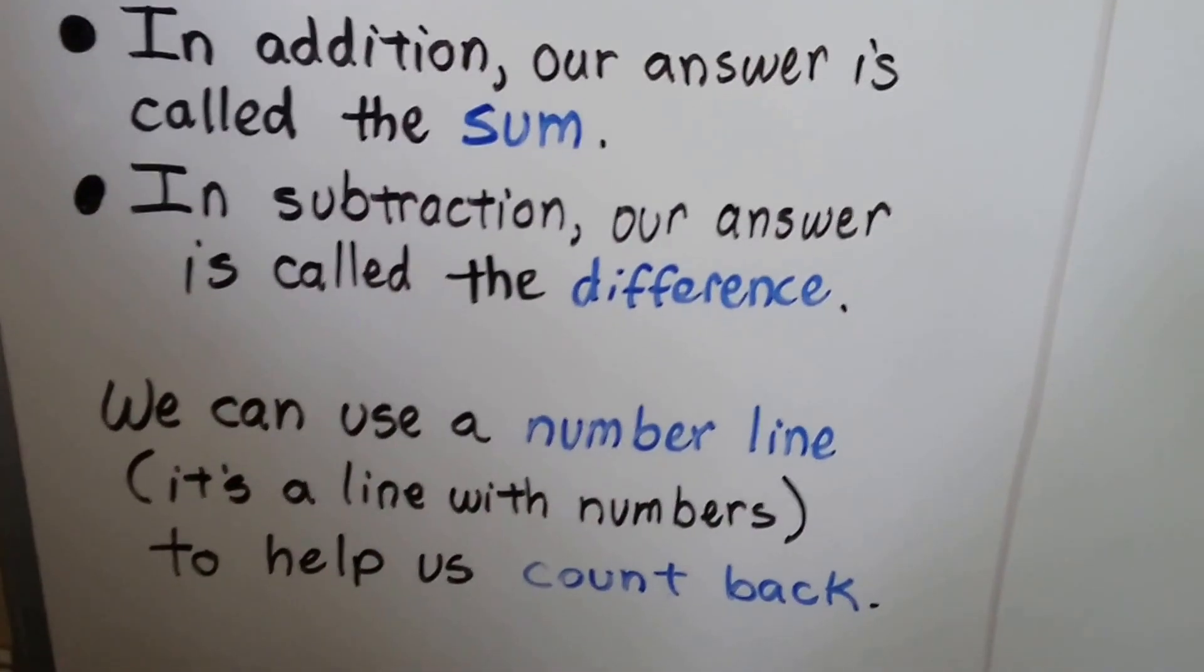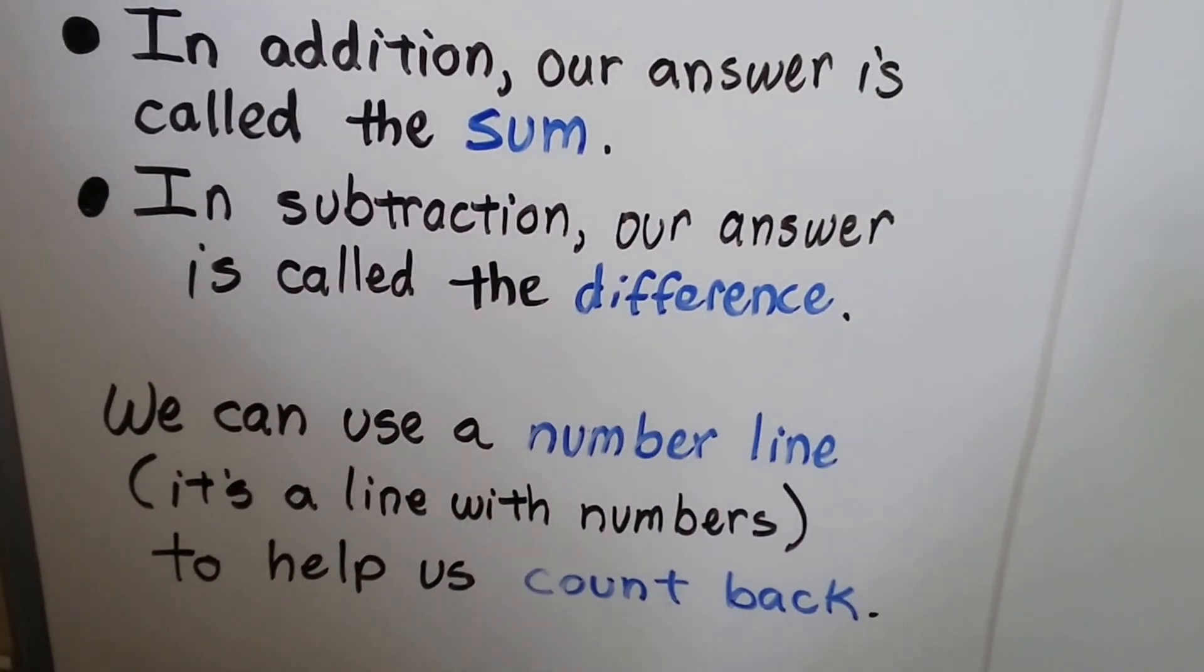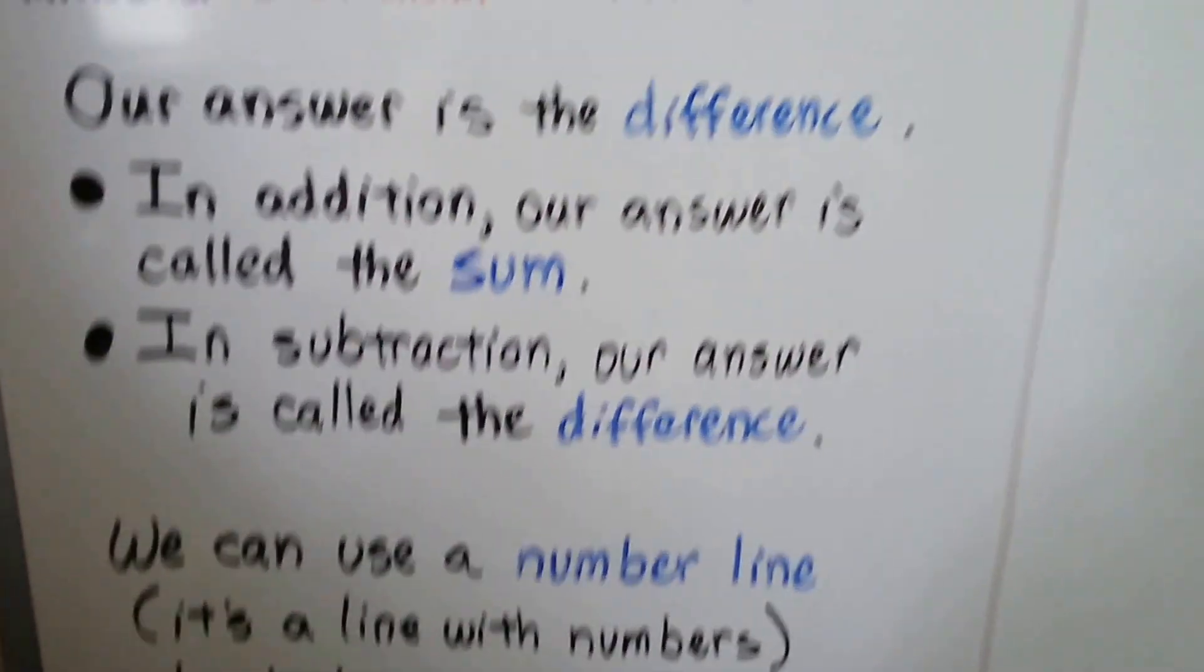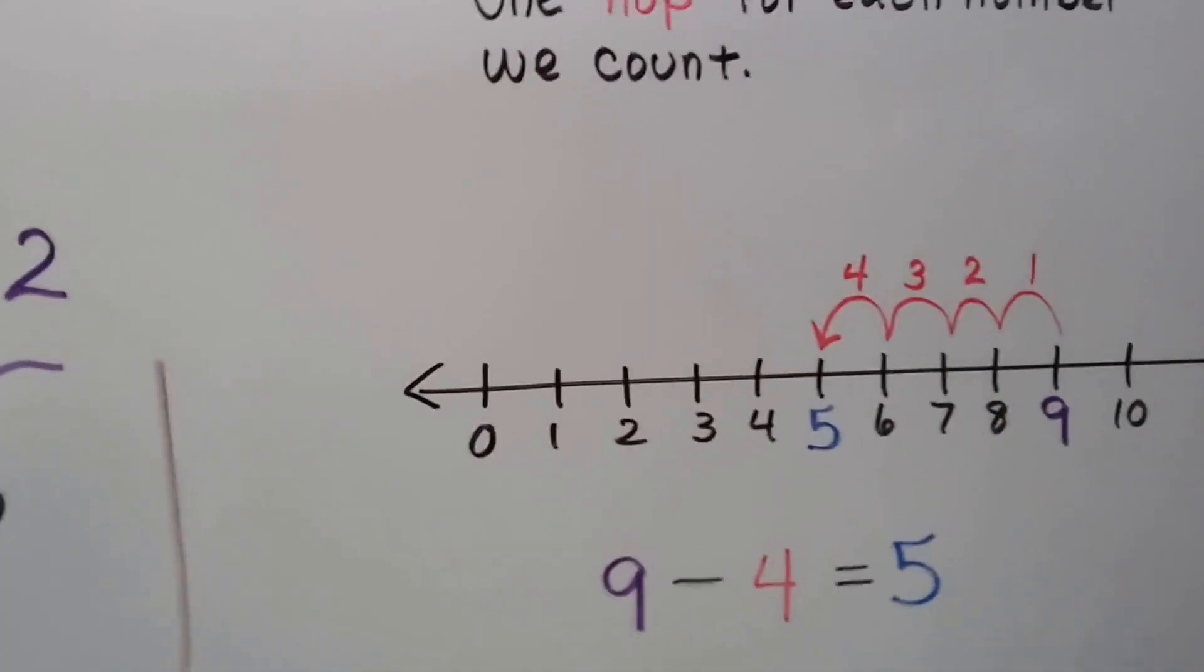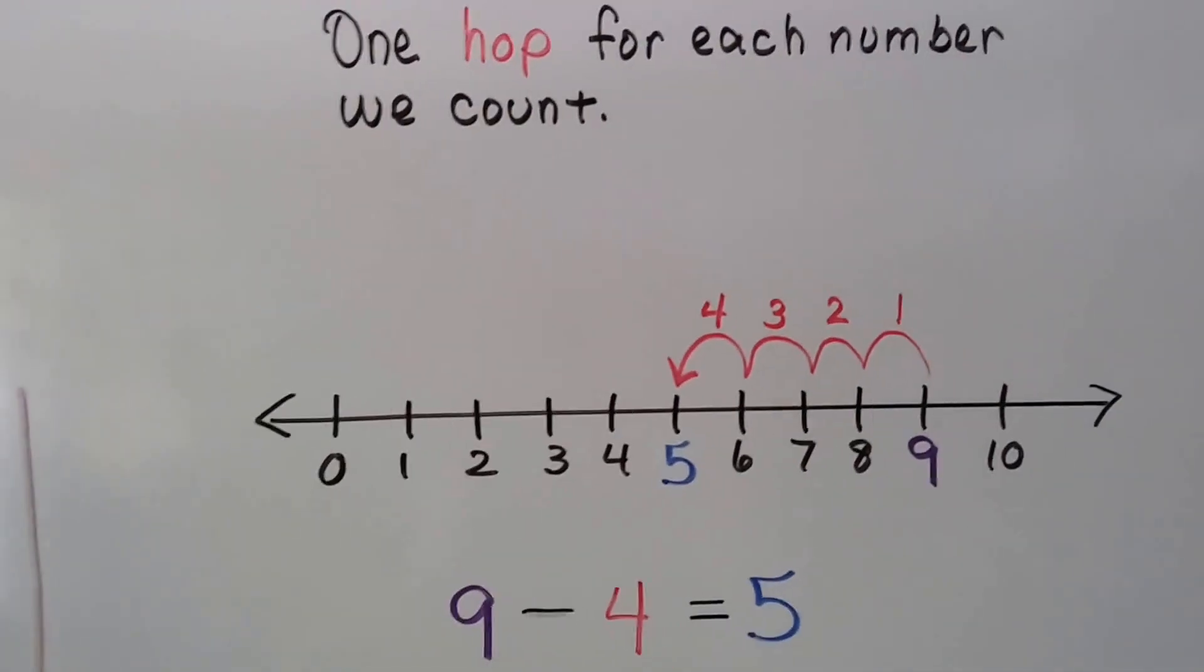We can use a number line, it's a line with numbers on it, to help us count back. One hop for each number we count.